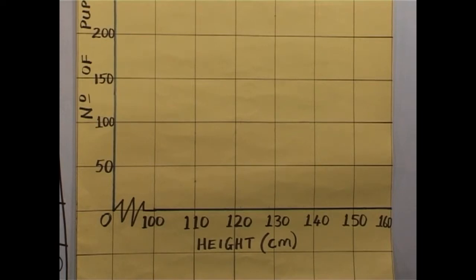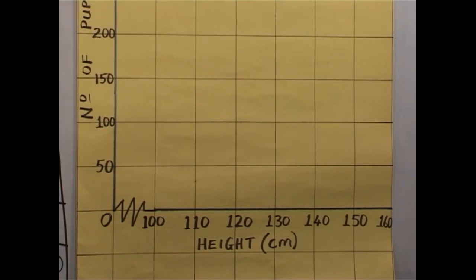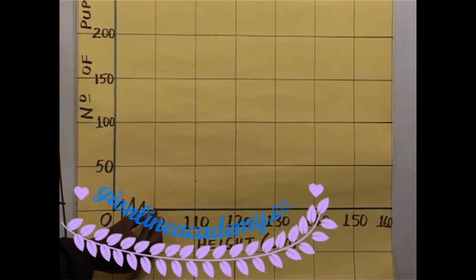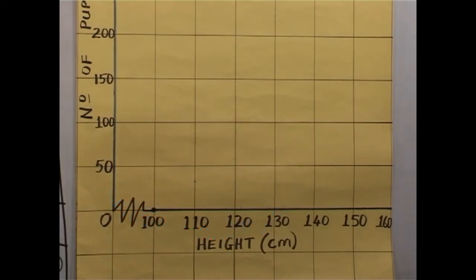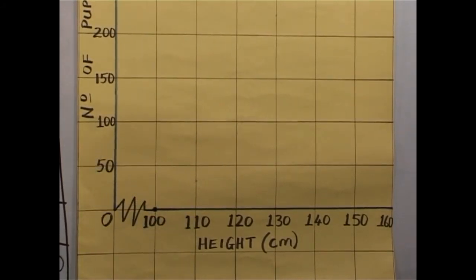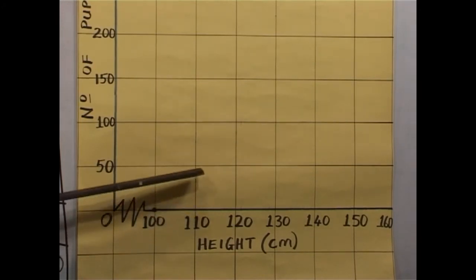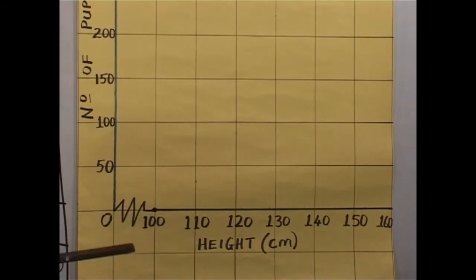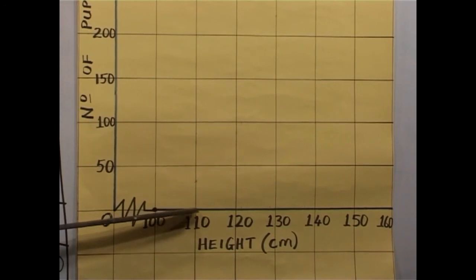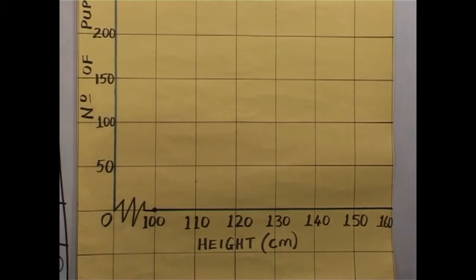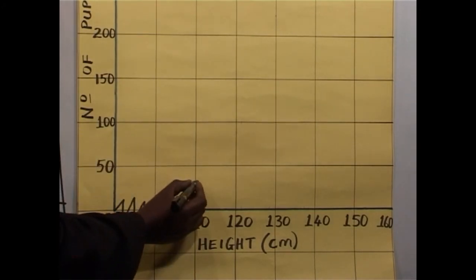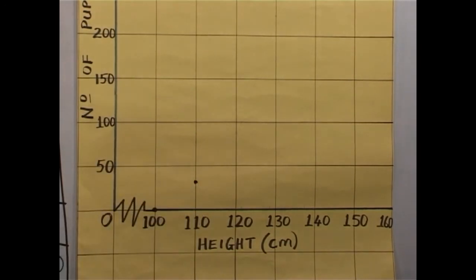Now, let us plot our values. Remember, we said the cumulative frequency curve is drawn by plotting the height against the cumulative frequency. So 100 is here, and 0 — I'll put a dot like that. The next one is 110, 27. So 110 — where will 27 be? On your graph paper, there are subdivisions between that figure and that line — small squares subdividing that interval. So you will be able to count until you reach 27. I know from here to there is 50, so 25 is exactly halfway. So 27 is slightly above 25. So we have 110, 27.